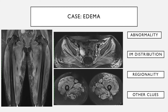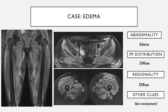In this first case, the abnormality is fairly diffuse muscle edema. The intramuscular distribution is diffusely involving the entire muscle, and the regionality shows all muscles are involved across the board. Looking carefully, there is also a little bit of edema in the subcutaneous tissues, indicating possible skin involvement. With diffuse muscle involvement and diffuse skin involvement, this is a case of dermatomyositis.